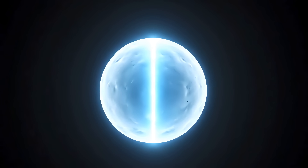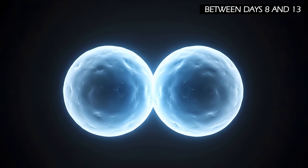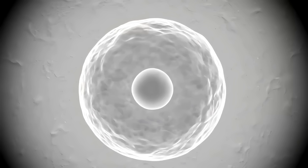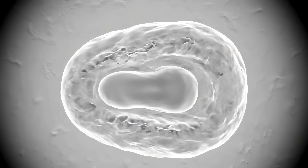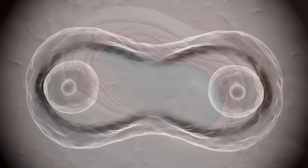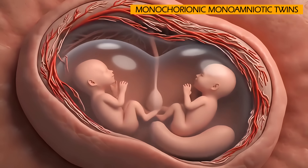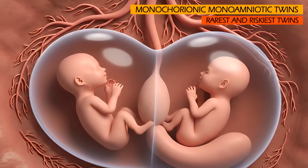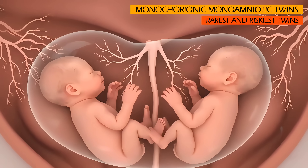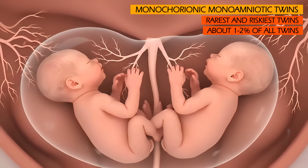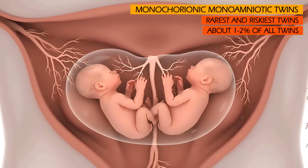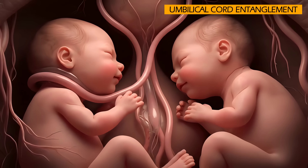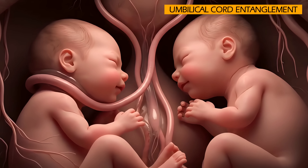If the division of the zygote happens even later — between days 8 and 13, after both the chorion and amnion have developed — the twins will share both a single placenta and a single amniotic sac. This is called monochorionic-monoamniotic twins. It is considered the rarest and riskiest type of identical twins, about 1-2% of all twins, as there is a higher chance of umbilical cord entanglement, which can compromise blood flow to one or both babies.